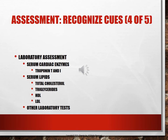Serum lipids are risk factors for cardiovascular disease. Total cholesterol should be less than 200. Triglycerides for females should be 35–135 and for males 40–160. HDL (high-density lipoprotein) — the good cholesterol — should be greater than 55 for females and greater than 45 for males, with closer to 100 being better. LDL (low-density lipoprotein) — the bad cholesterol — should be below 130, and you want a three-to-one ratio of HDL to LDL.